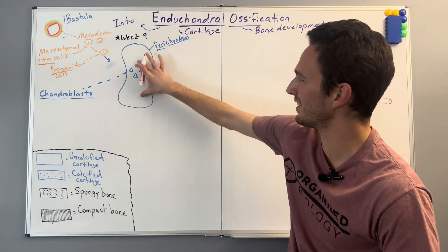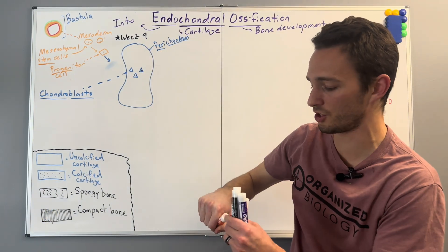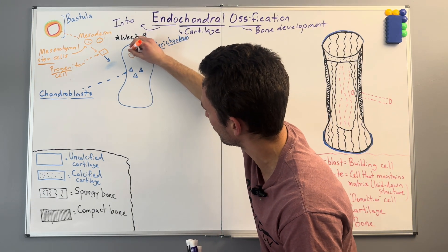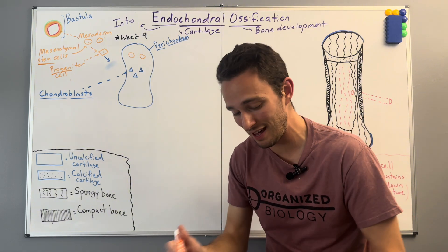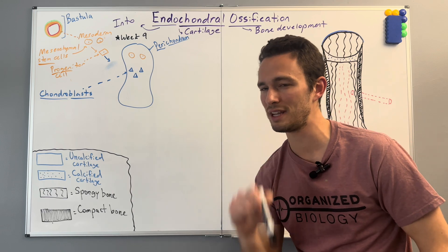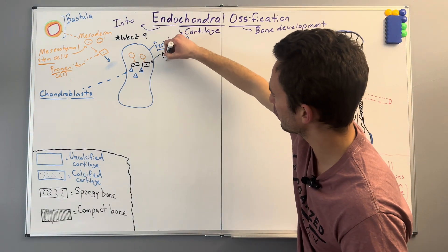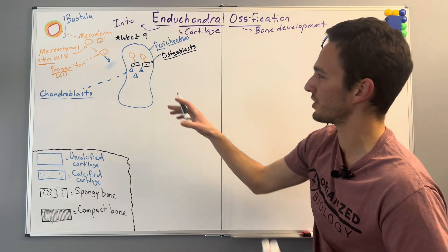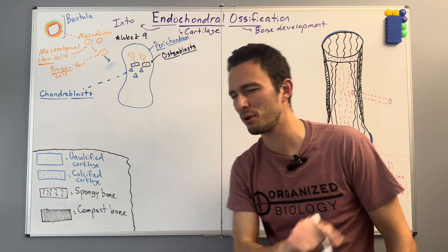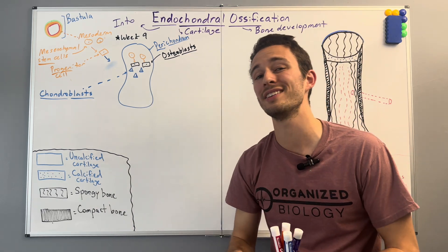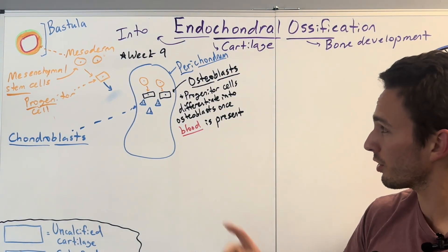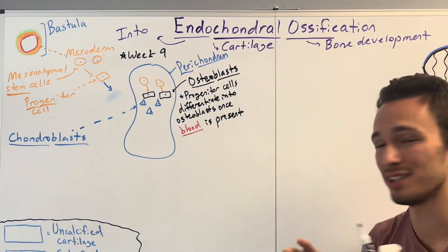We've got a chondroblast chilling inside this perichondrium with some uncalcified cartilage, but we need to turn it into bone. Some of these progenitor cells are still going to be present and they are going to begin differentiating at a certain point into osteoblasts — osteoblasts literally translates to bone builder cells. I'm going to draw them like bricks because they're kind of laying brick by brick building bone. But the problem is this will only occur when there is a blood supply, so we've got to get some blood supply in here.